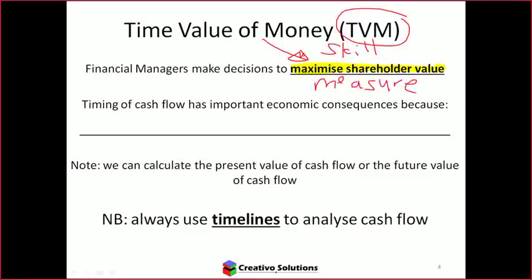Time value of money is a measure or tool we can use to measure the accounting records and make decisions. Financial statements give us information; we need to use that information to make a decision. To help us make a decision, we need to measure things as accurately as possible, and time value of money allows us to do that. It's a way to measure value.